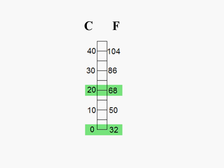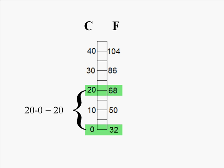We can see that the change on the Celsius scale from 0 to 20 degrees is 20, and the corresponding change on the Fahrenheit scale is 68 minus 32, which is 36.